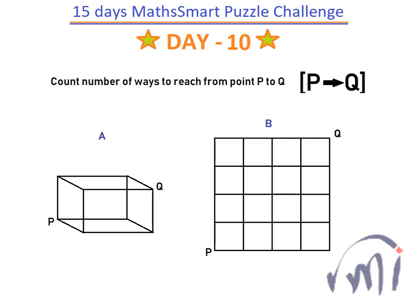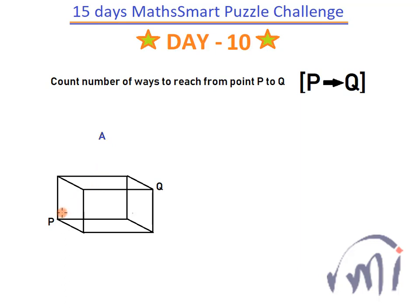Hi, so on day 10 we had these two problems where we had to find the number of ways in which we can start from point P and reach point Q. There are two problems: in the first one we have a cuboid and in the second one we have a grid of squares. Let us first solve the first problem where we have to start from point P and reach point Q.